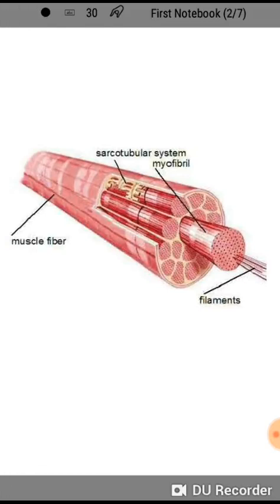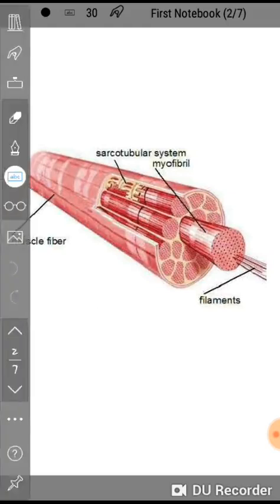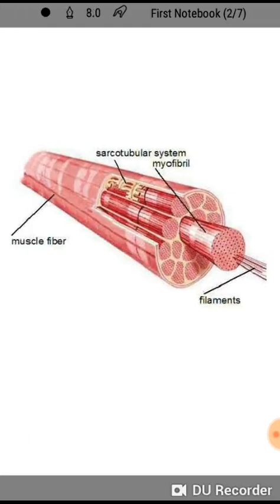First of all, we have to know about a simple muscle fiber. This is a muscle fiber, and in this muscle fiber you can easily see the filaments. In each filament there are numerous myofibrils present. The sarco-tubular system is the system which is present in this muscle, and the penetration in skeletal muscle forms the sarco-tubular system.